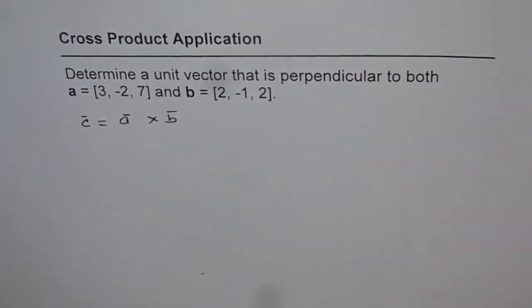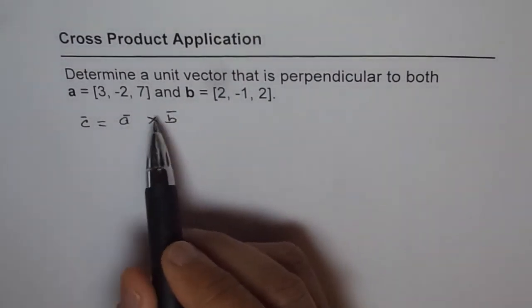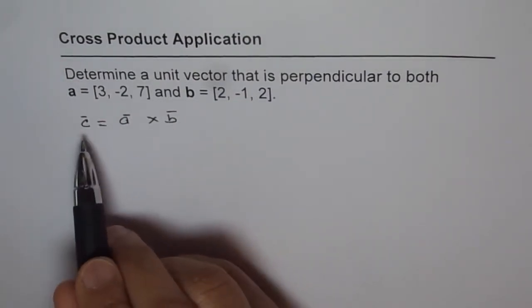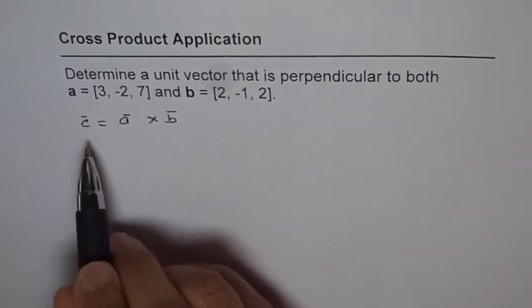That is what it is. Now, to make it a unit vector, we need to divide it by whatever you get here. So this is a vector, not a unit vector. Remember that.